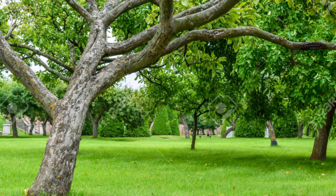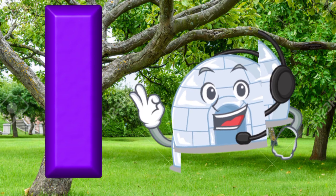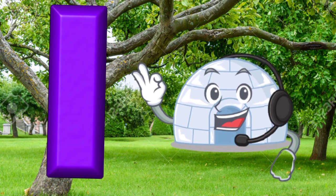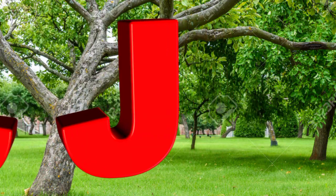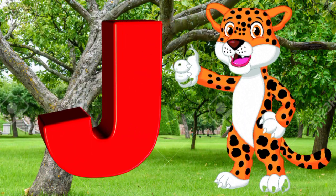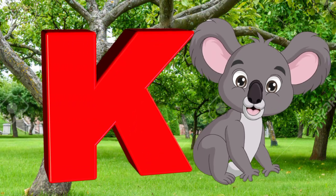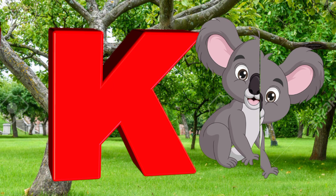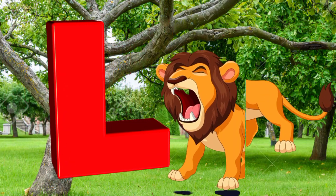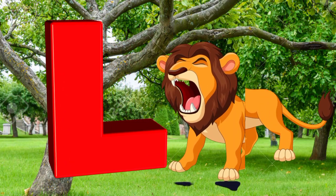I is for igloo, i-i-igloo. J is for jump, j-j-jump. K is for kangaroo, k-k-kangaroo. L is for lion, l-l-lion.